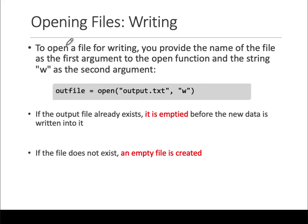To open a file for writing, you provide the name of the file again - the same thing - but now the mode is changed to write mode 'w'. You give the name of the file. If you want to store it at another location like the desktop, you have to give the full path C:\, etc. But notice the command open(filename, mode) is the same as for reading - only the mode makes it different.